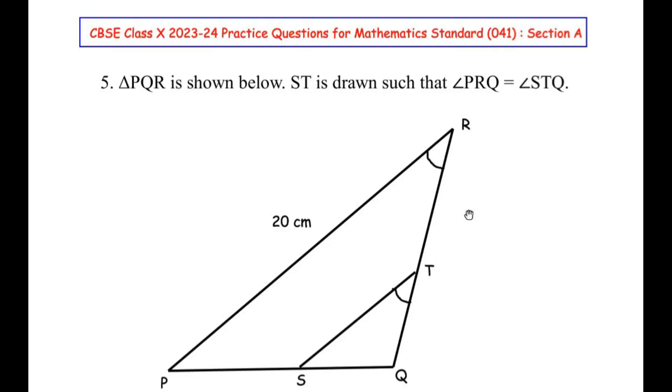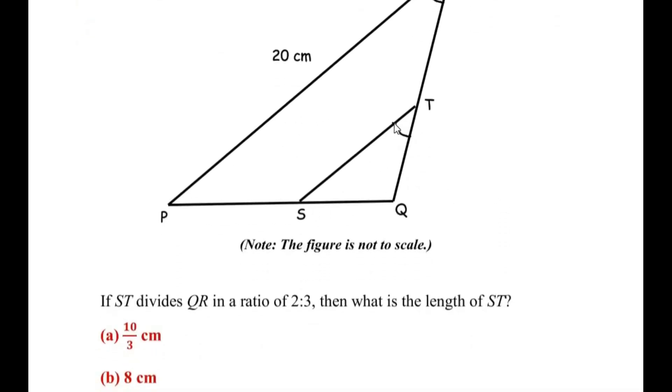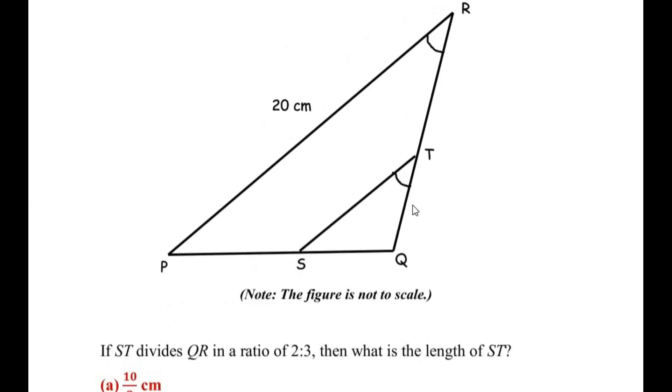Now this question is from the Triangles chapter, i.e. Similarity of Triangles. Triangle PQR is shown below. ST is drawn such that angle PRQ is equal to angle STQ. If ST divides QR in the ratio 2 is to 3, then what is the length of ST?